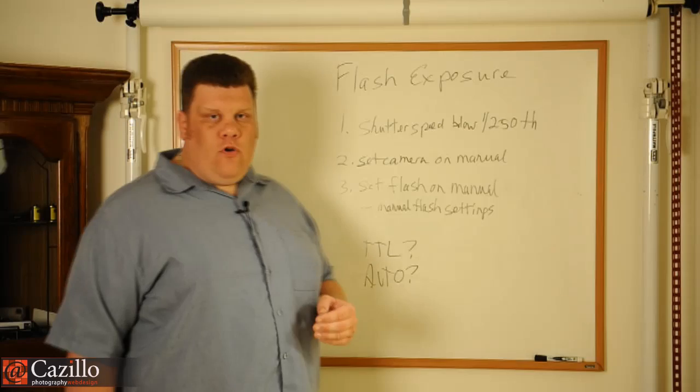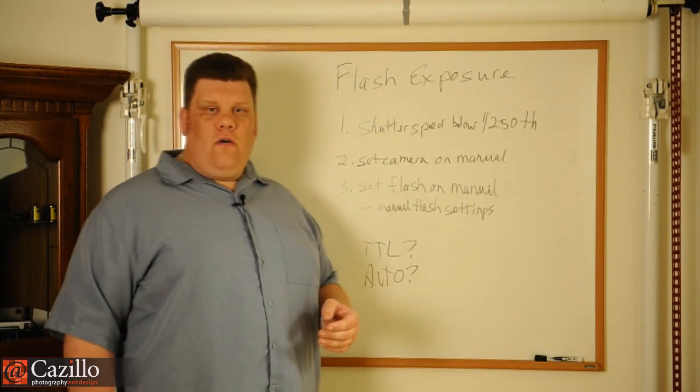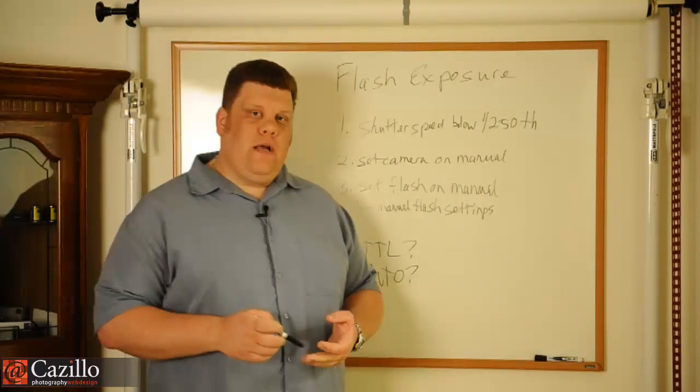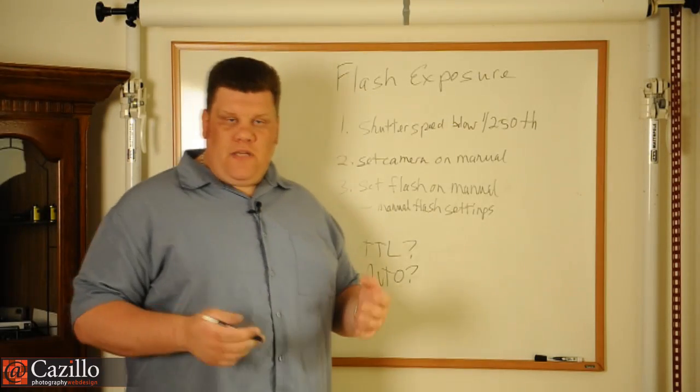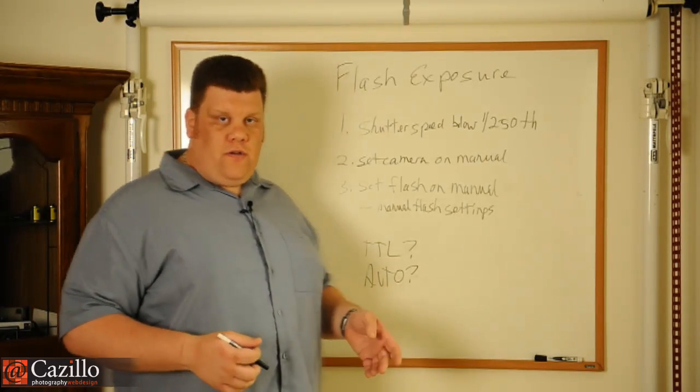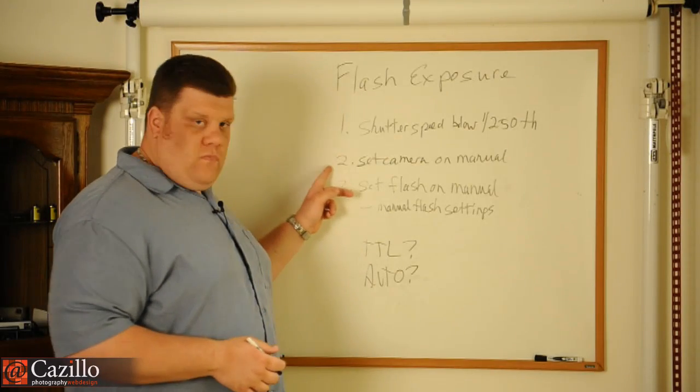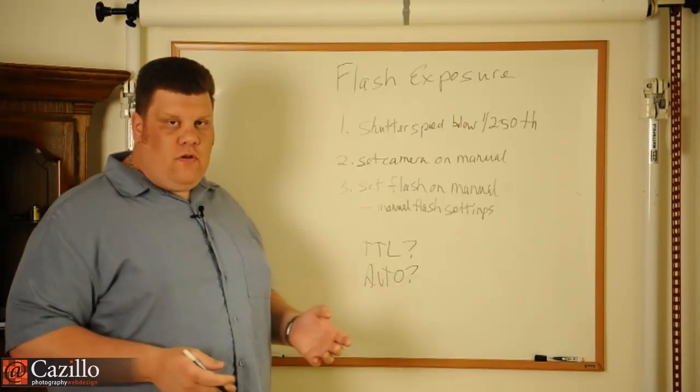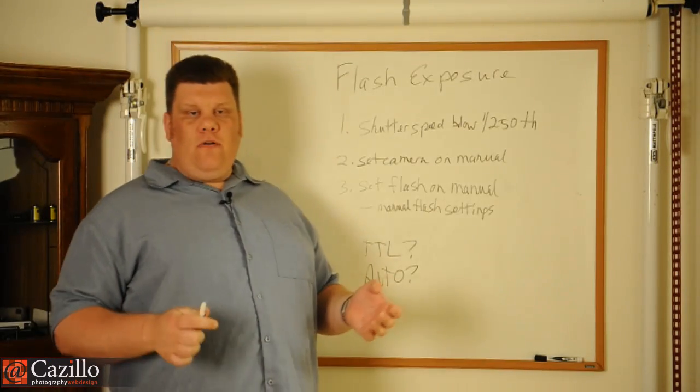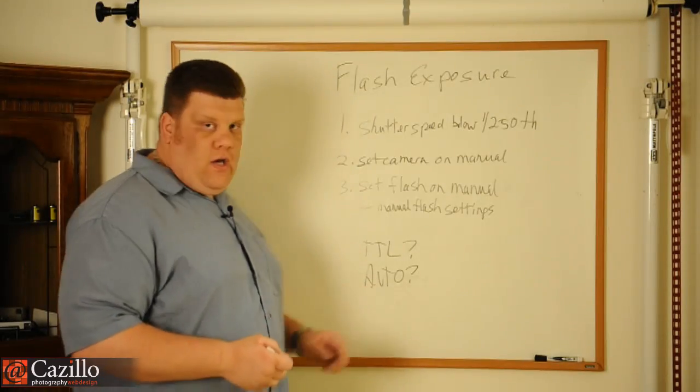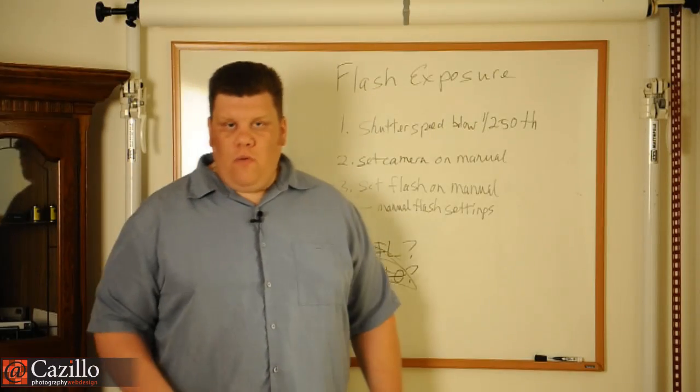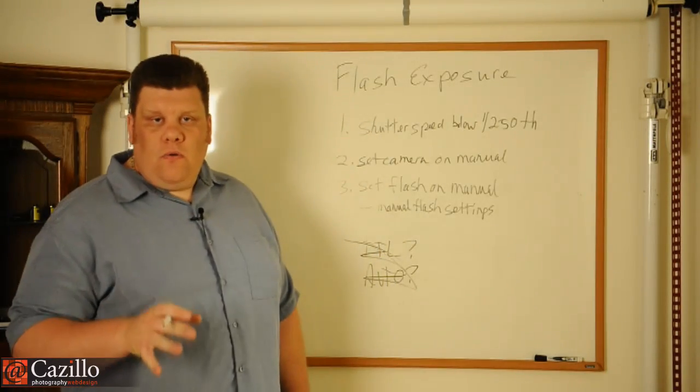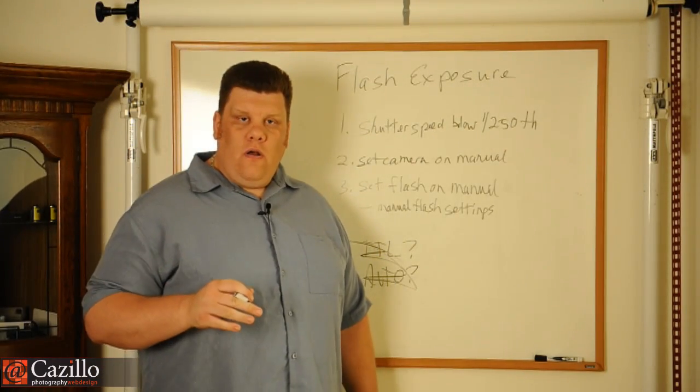Second, set your camera on manual. You should already know how your shutter speed, your aperture, and your ISO work, so you should be proficient at that, be able to get a normal exposure without issue. Last thing, set the flash on manual. Everybody wants to sit here and play with TTL, play with the auto modes. We don't want those. We don't want to play with those because they're not going to allow us to get proficient.